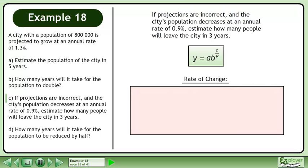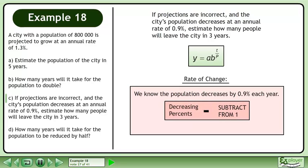We need to find the rate of change. We know the population decreases by 0.9% each year. When we have a decreasing percent, we subtract it from 1. The b value for this question is 1 minus 0.009 equals 0.991.